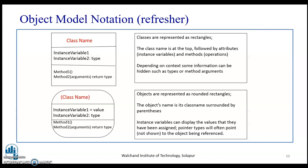Now that you understand attributes, let us see how you model this. What is the graphical notation for representing a class and an object? Classes are represented as rectangles. The class name is at the top, followed by attribute instances and the methods. Depending on the context, some information can be hidden, such as types or method arguments.